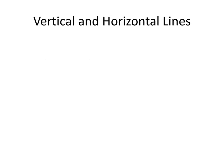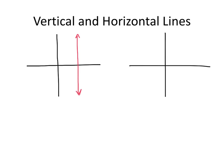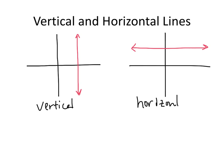So vertical and horizontal lines: vertical lines are going to look a little something like this, and horizontal lines are going to look a little something like this. This line is vertical and this line is horizontal. A vertical line — if you notice — all of the points on this line have the same x-coordinate. The x is never changing for the points on this line, and that means that the equation of that line is going to look something like x equals some constant.